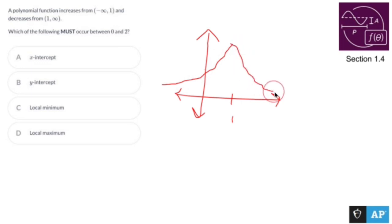And I don't know what it looks like and I'm purposely making it look bad. So it's asking what must happen between zero and two. So here's zero, and here's two. What must happen is I'm going to have a maximum.